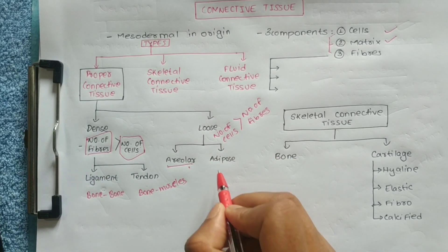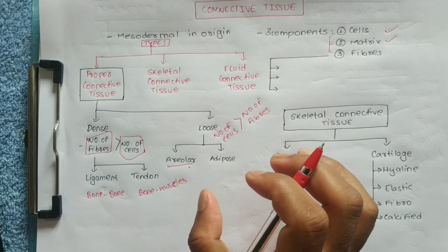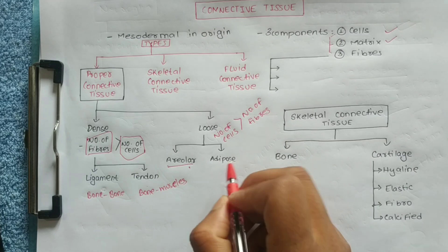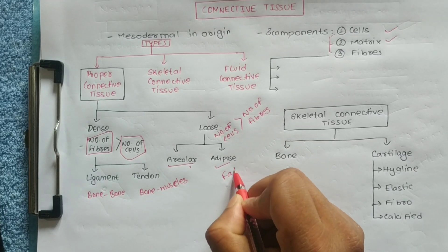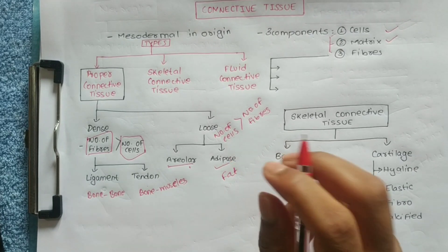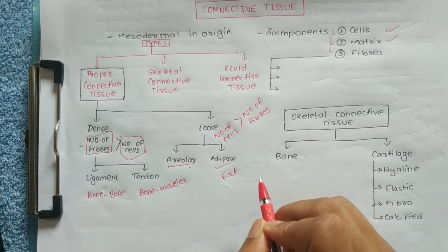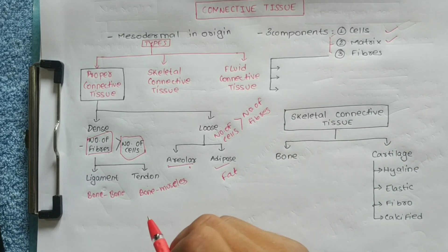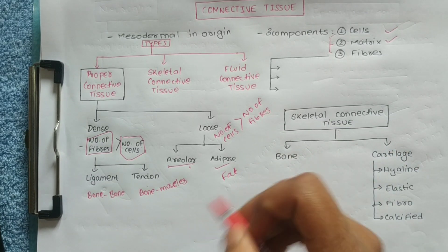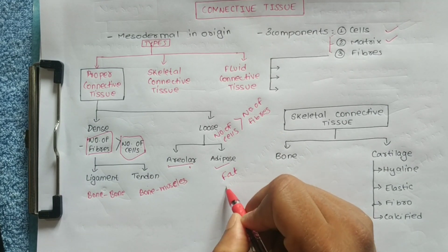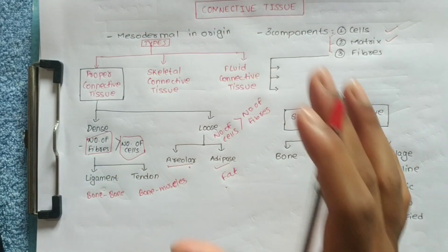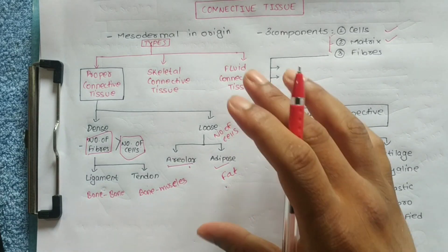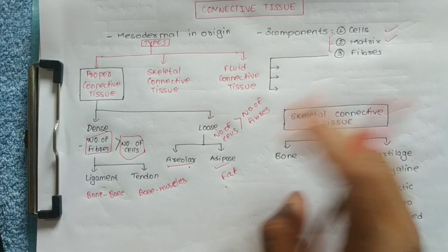When we say fat tissue, fat globules are present. This is called adipose tissue, where fat is stored. Fiber is present in lesser numbers, and the tissue contains different kinds of cells. Mainly, fat-storing tissue is called adipose tissue and it is found throughout the body.